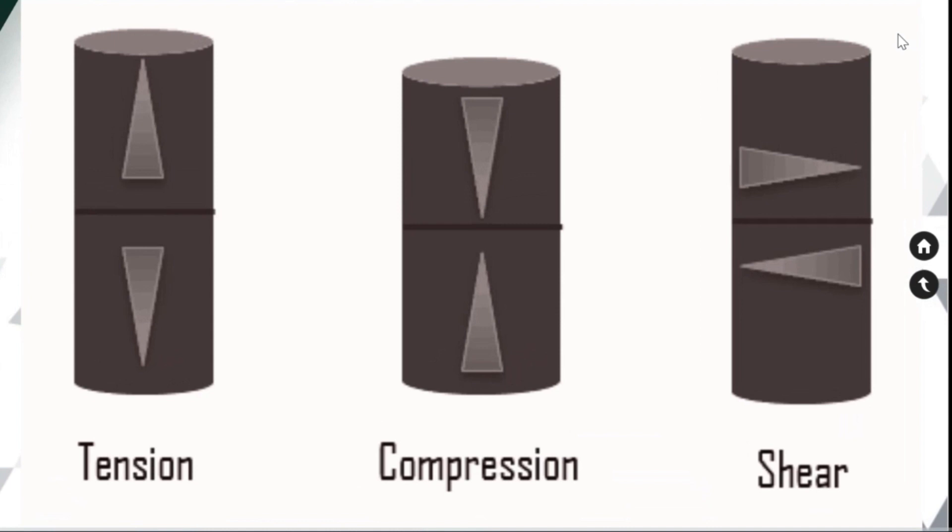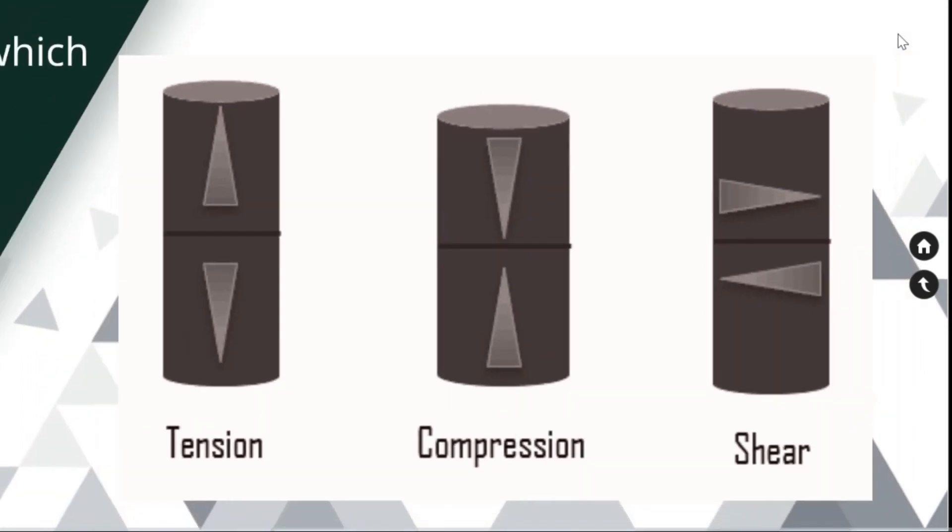The compressive strength is the ability of a material to withstand a squeezing load without breaking. Shear strength is the ability of a material to withstand load which have a cutting action. For example, when we use a scissor, the shear stress is happening on the material.